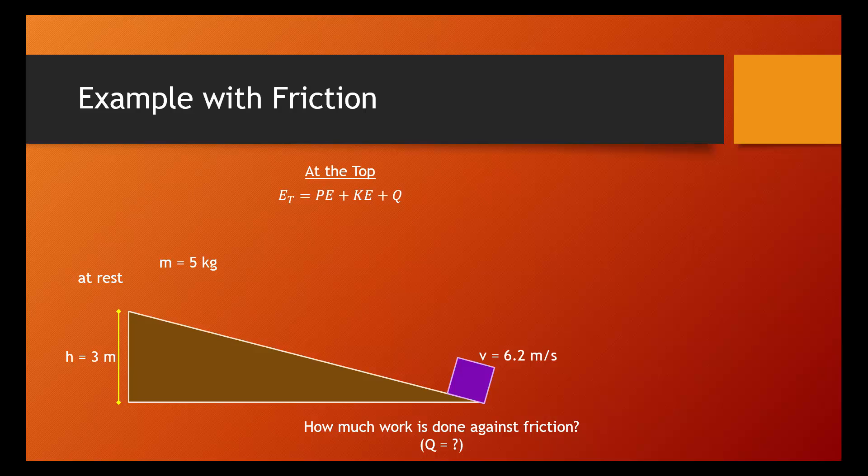As we've done before, let's start at the beginning and figure out how much total energy this object had. So this is the sum of its potential, kinetic, and internal energy. Well, at the top it's at rest, so there's no kinetic energy. And since it hasn't moved yet, there hasn't been any friction, so there hasn't been a chance to produce any internal energy. At the top, there's only gravitational potential energy. If we substitute in the mass and the acceleration due to gravity and the height, we can find that this object at the beginning had a total energy of 147.15 joules.